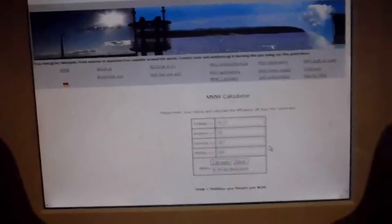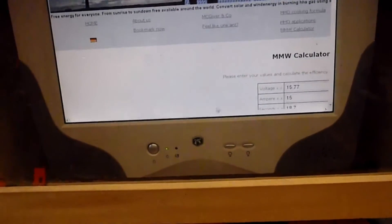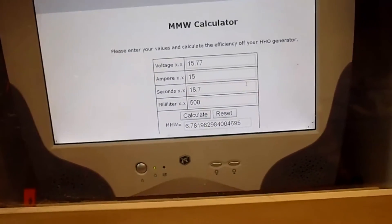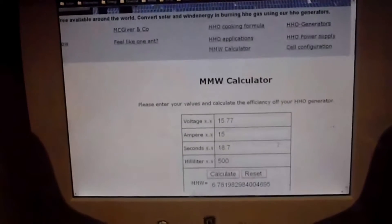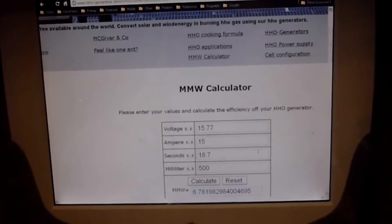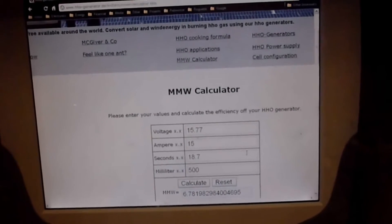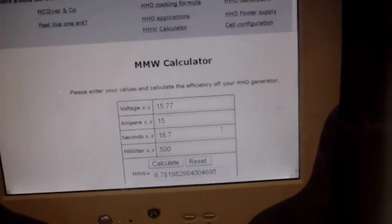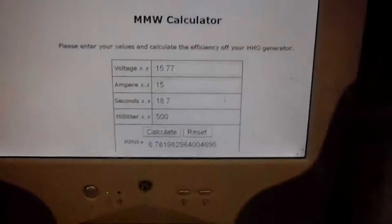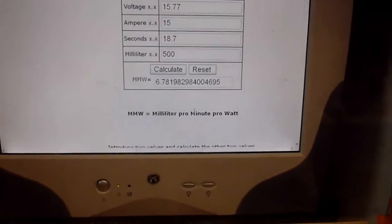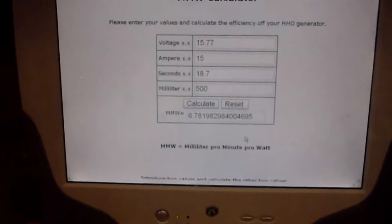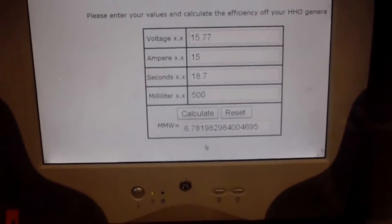And, I've got to say, I love this little website here. Let me bring it up here. So, this is hho-generator.de slash en slash hho slash mmw slash dash calculator.htm. Anyway, it's a good little calculator for doing this stuff quick. Increase it once more here, so we can see it real well.